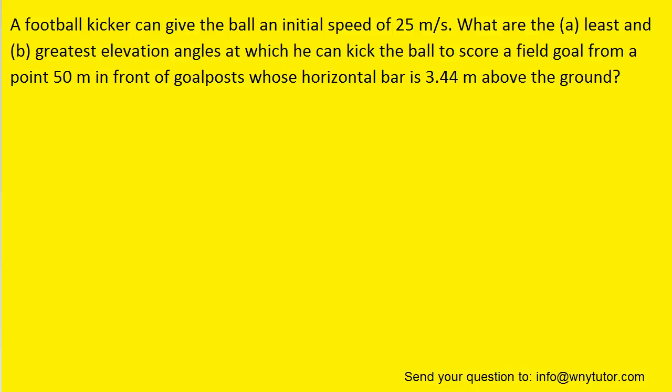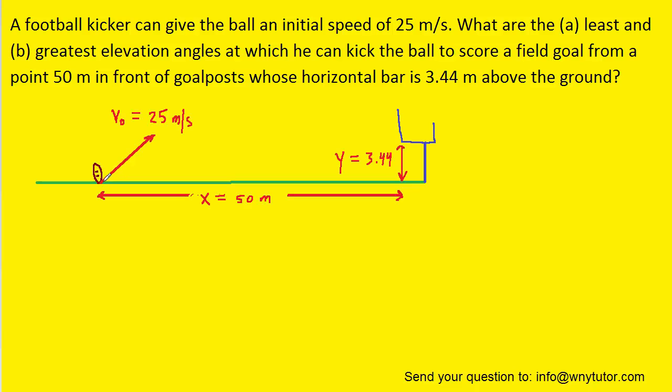We can go ahead and draw a picture that captures the information being described. Here we have the football being launched with an initial speed of 25 meters per second, and it's going to travel a horizontal distance of 50 meters and reach the goalpost, which has a final vertical height of 3.44 meters. It turns out that there are going to be two angles that we're looking for: the smallest angle and the largest angle that will get the ball to clear the goalposts.